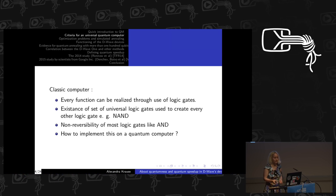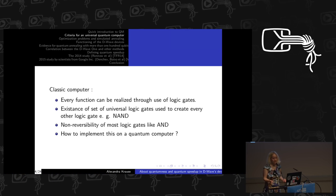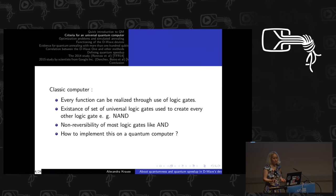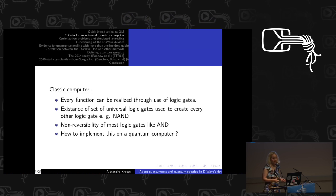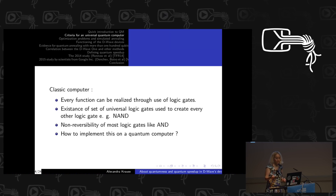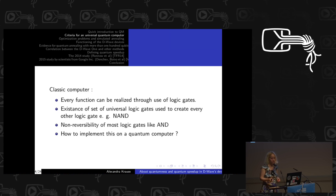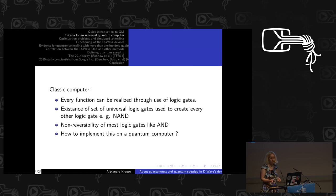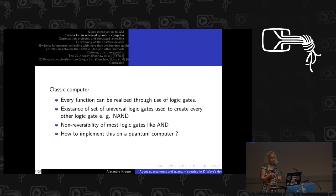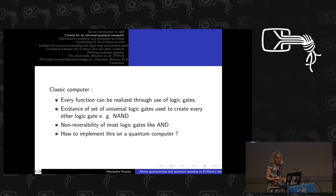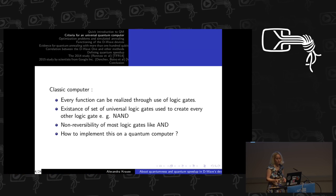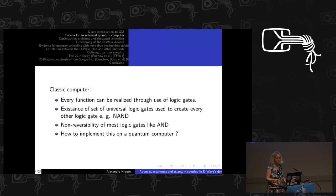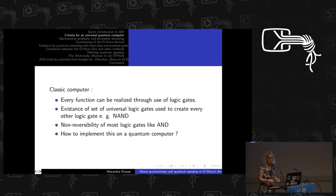We can have any logic gate, but how can we prove that we can implement any logic gate? We say we have universal logic gates, like NAND, with which we can build any other logic gate. So to prove that a system is a classical computer, we just have to make sure that the NAND gate can be implemented on every bit.